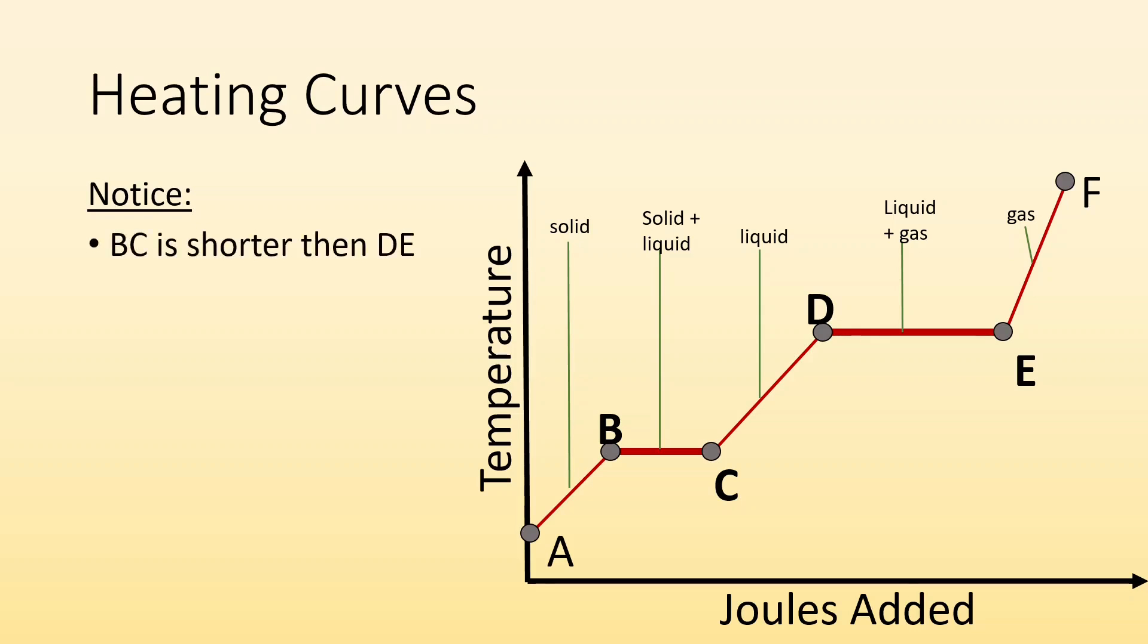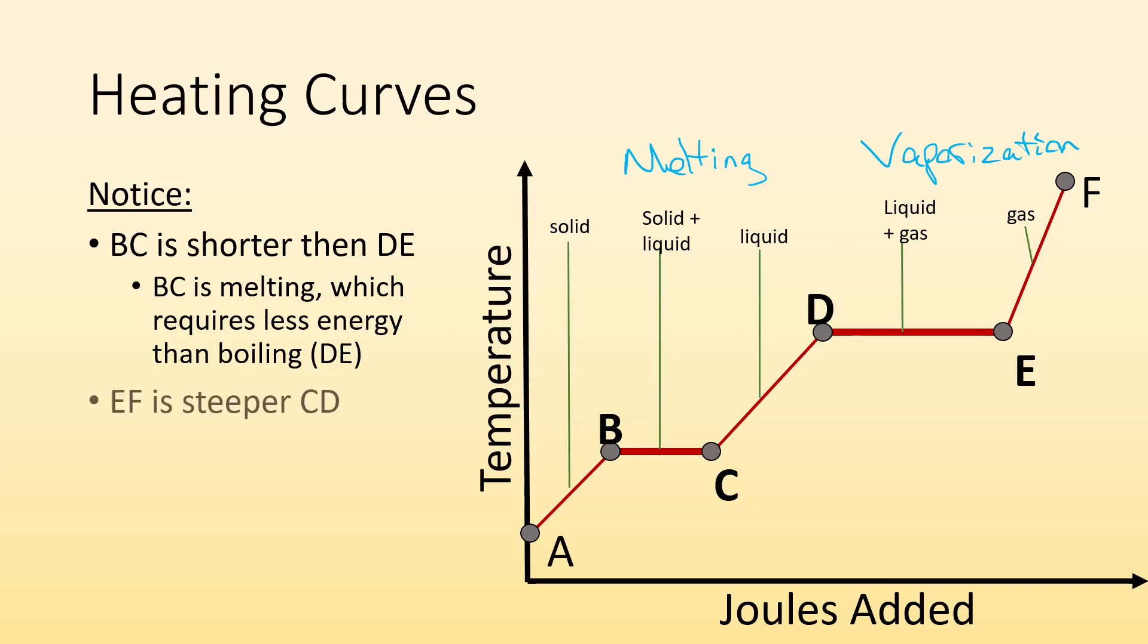So things to notice. Section BC is shorter than section DE. So BC is where we have the melting and DE is where we have the vaporization. So the reason for that is melting requires a lot less energy than boiling does. So if you take a look at the heat of fusion of water, it's like 334 joules per gram for melting, but for vaporization it's like 2260 joules per gram. So it takes a lot more energy to vaporize something than it does to melt something.